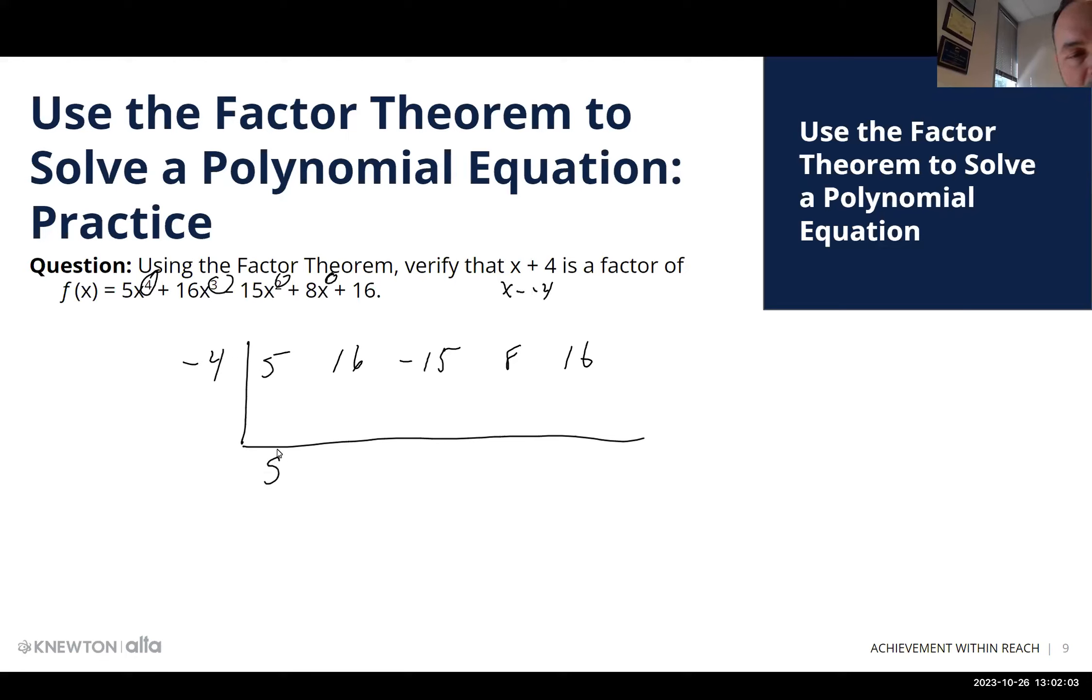We're going to always bring down the 5. Negative 4 times 5 is minus 20. Then 16 minus 20 is a negative 4. Negative 4 times negative 4 is a 16. Positive 16. Negative 15 plus 16 is a positive 1.